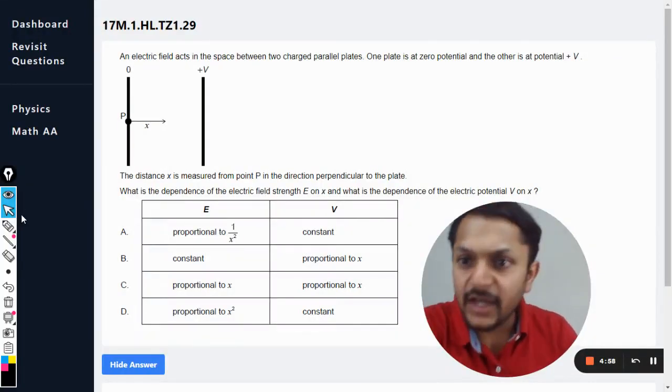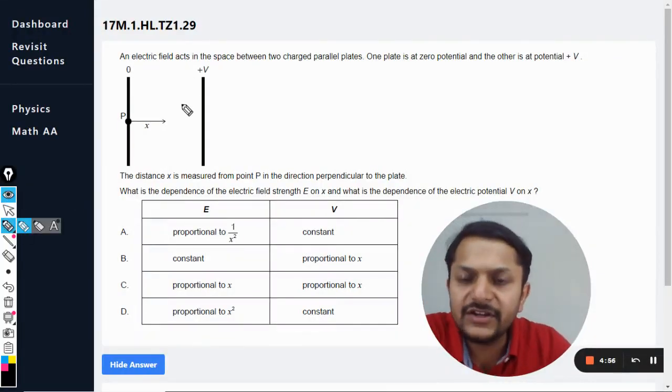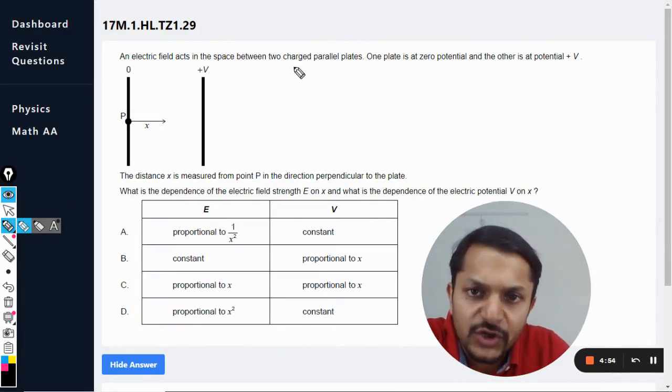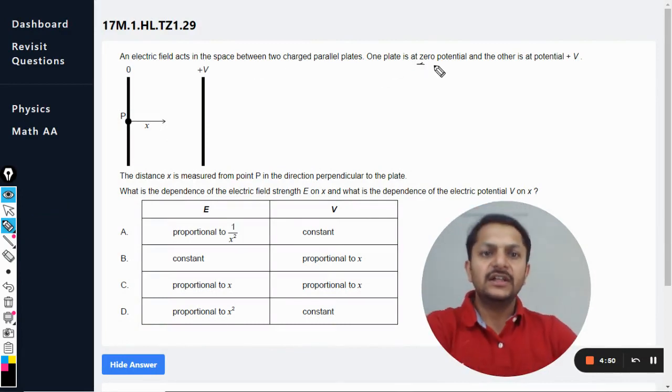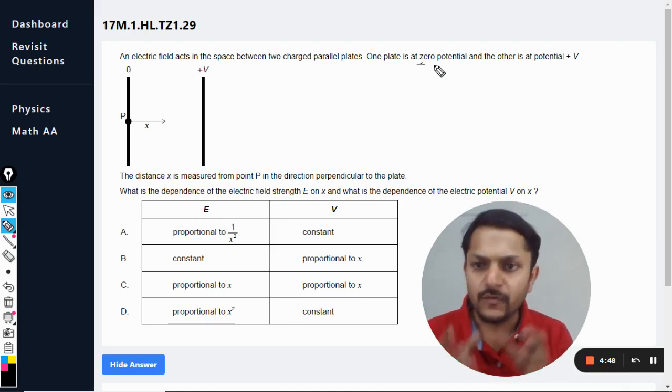Okay, dear students, so let us see how we are going to solve this question. An electric field acts in the space between two charged parallel plates. One plate is at zero potential, the other plate is at positive V.